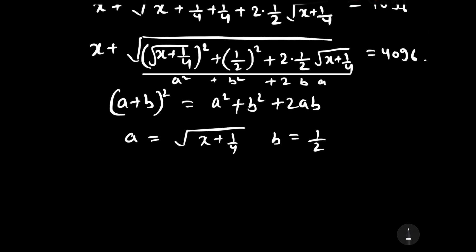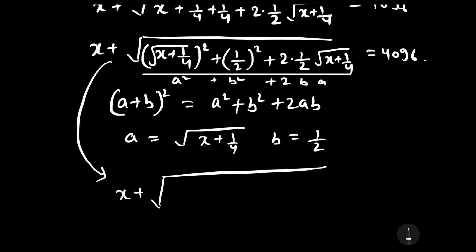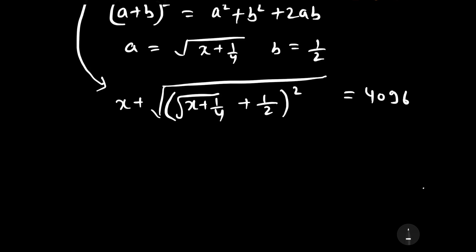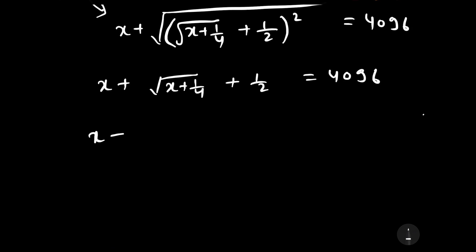Therefore, this expression can be written as under root x plus 1 by 4, plus 1 by 2, whole square, equal to 4096. Now it can be written as x plus under root x plus 1 by 4 plus 1 by 2, equal to 4096. Further, 1 by 2 can be written as 1 by 4 plus 1 by 4, plus under root x plus 1 by 4, equal to 4096.